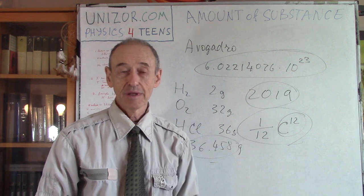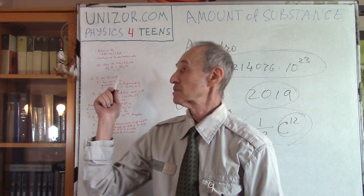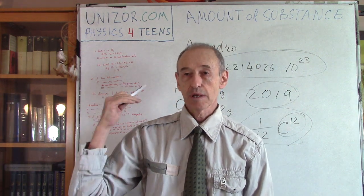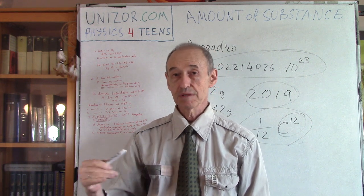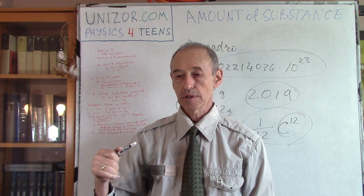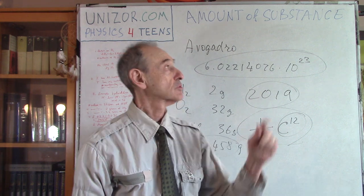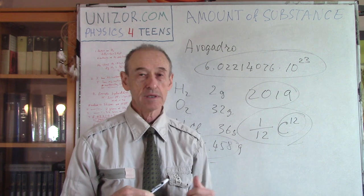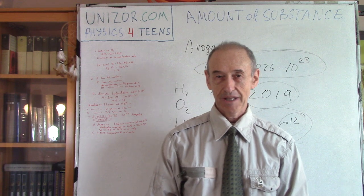That's it. Read the notes for this lecture — they're on Unisor.com. Go to the Physics for Genes course, find the part called Units in Physics, and the menu item Base SI Units. Among the Base SI Units, you will find amount of substance — basically the mole, which we were talking about. Thank you very much, and good luck.